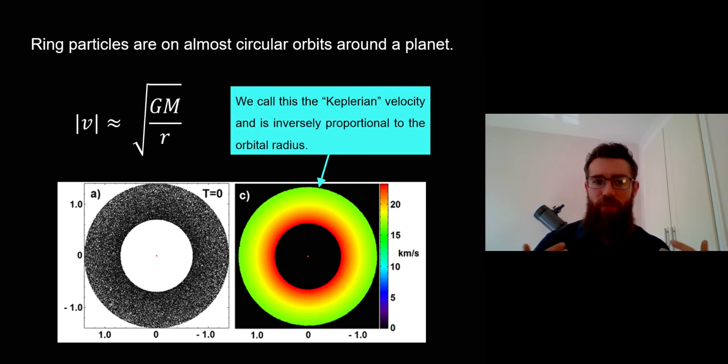If you know your Keplerian laws, we call the velocity these ring particles have as they're on their orbit a Keplerian velocity. What it means is that the closer to the planet they are, the faster they're going to orbit in order to have that circular stable orbit. If you want to work out what those velocities might be, you've got a very simple equation there at the top.